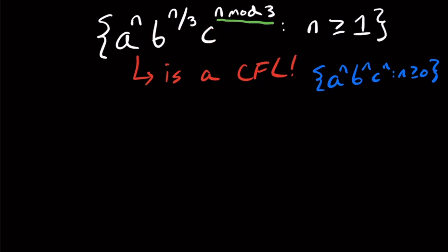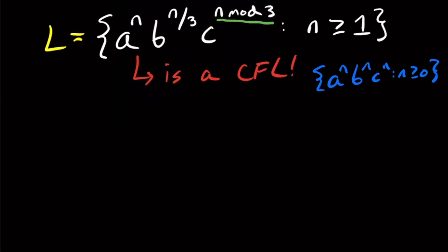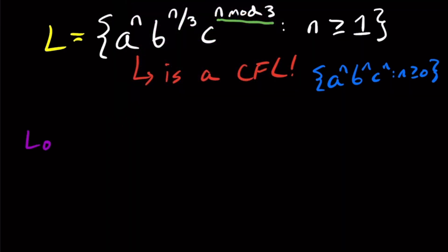So I want to convince you that this language is context-free. What I'm going to do is call this language L, and the three cases we need to worry about are when n is a multiple of three, when n is one modulo three, or n is two modulo three. Remember, n modulo three is what is the remainder when n is divided by three, and there are only three possibilities: the remainder is zero, one, or two. So I'm going to split it up into three languages — L0, L1, and L2 — depending on what the remainder is.